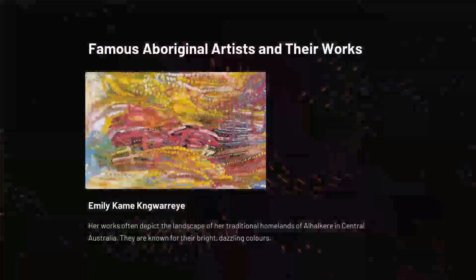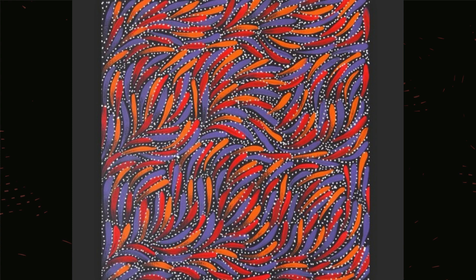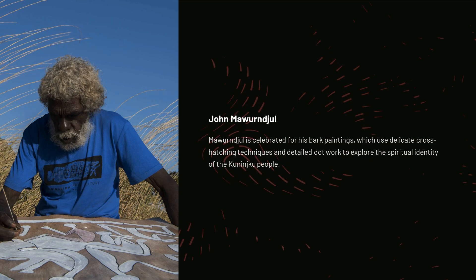Famous Aboriginal Artists and Their Works. Emily K. Mwari: Her works often depict the landscape of her traditional homelands of Alhokir in central Australia. They are known for their bright, dazzling colors.